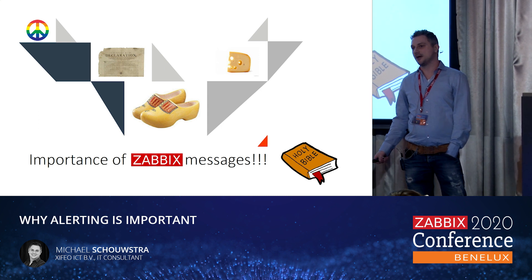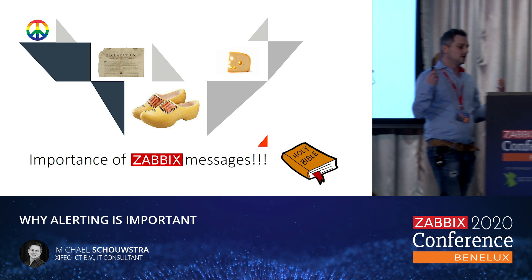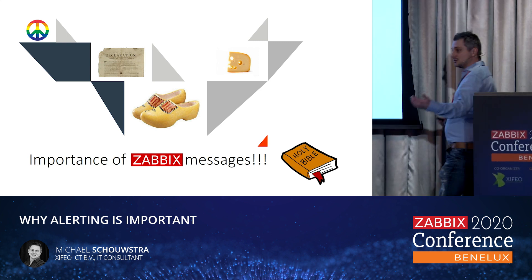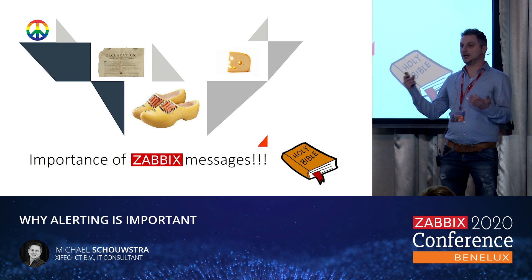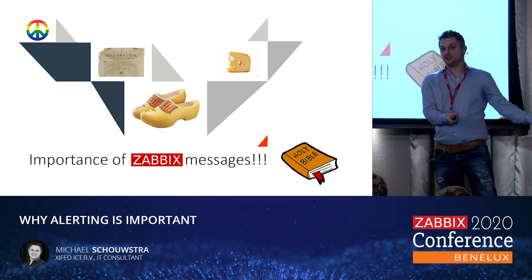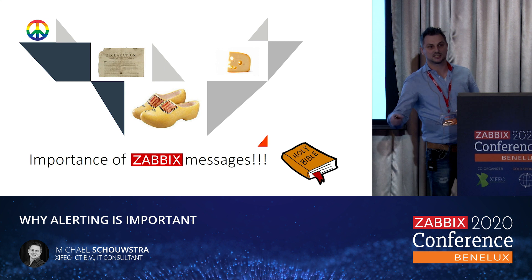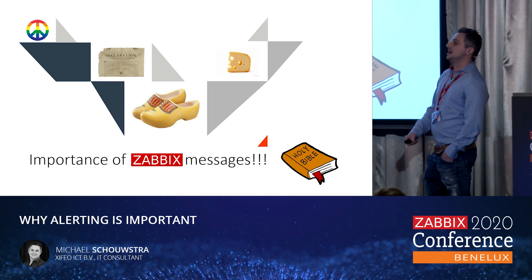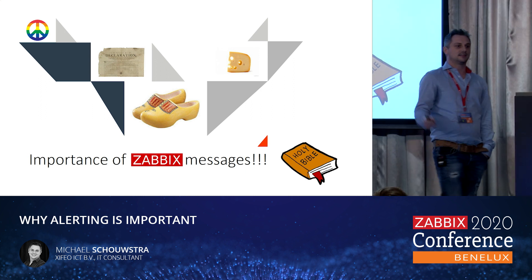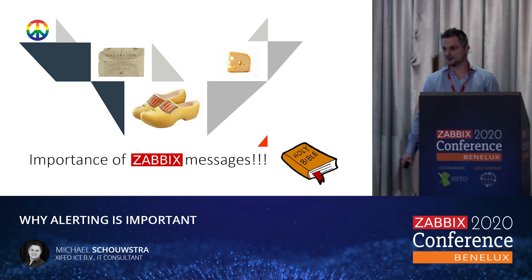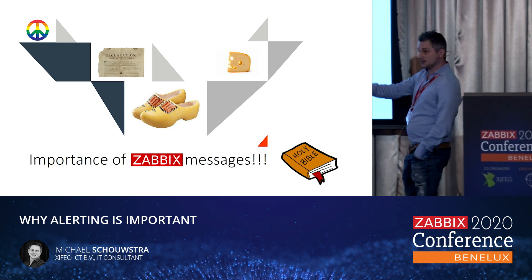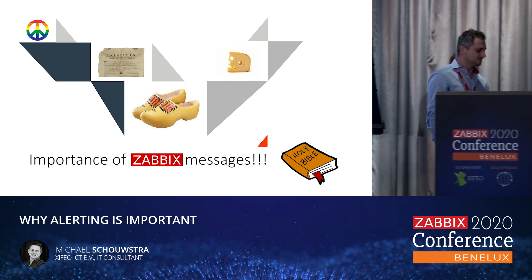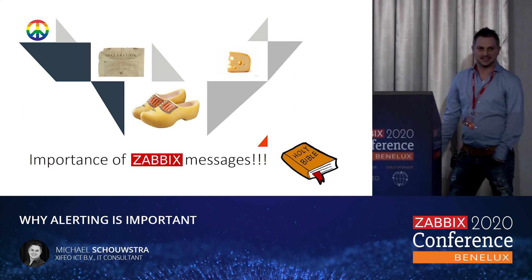Why are they important actually? We spend a lot of time in Zabbix in order to get data, in order to collect data in different ways, whether we do it by an agent or whether we're actually using SNMP or any other mechanism that's out there to collect data. We spend a lot of time on configuring things, connecting things, opening firewall ports in order to actually get the data. And then nobody reads the message. That's the worst thing that can happen.